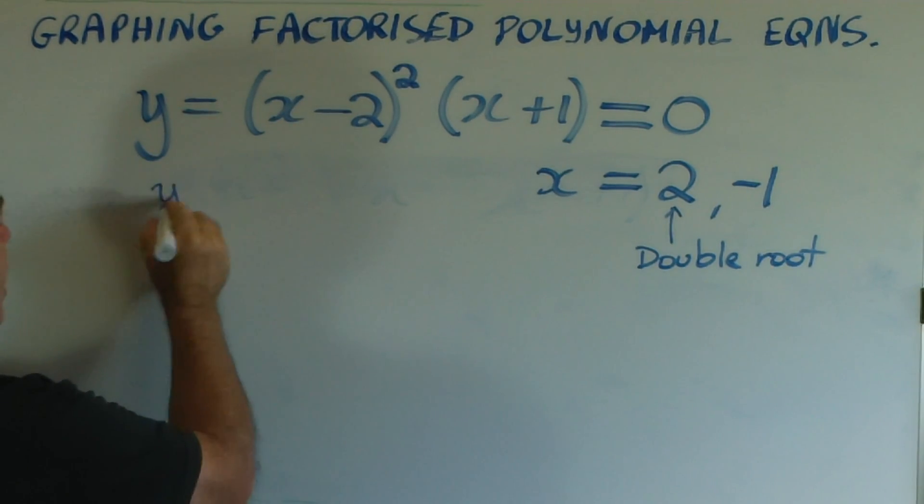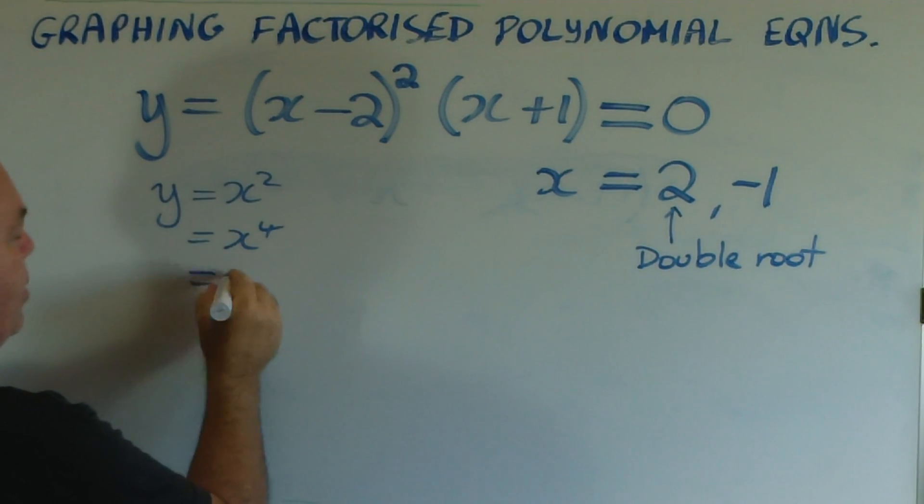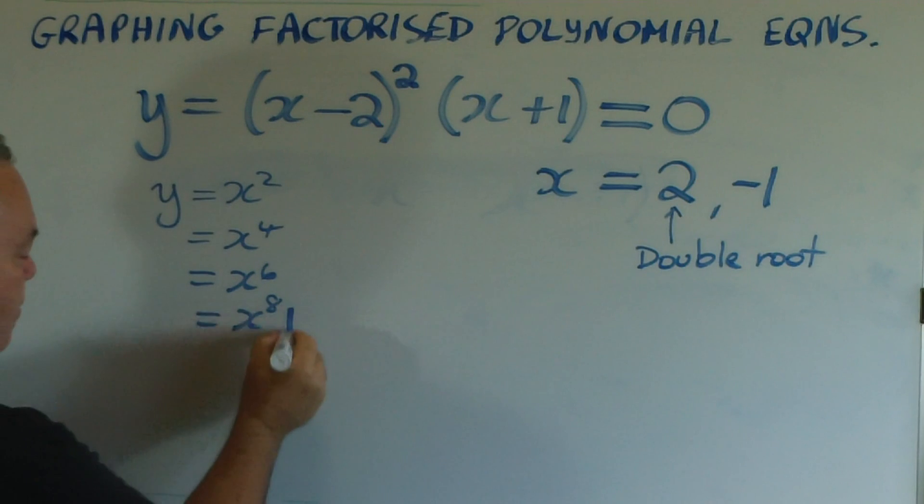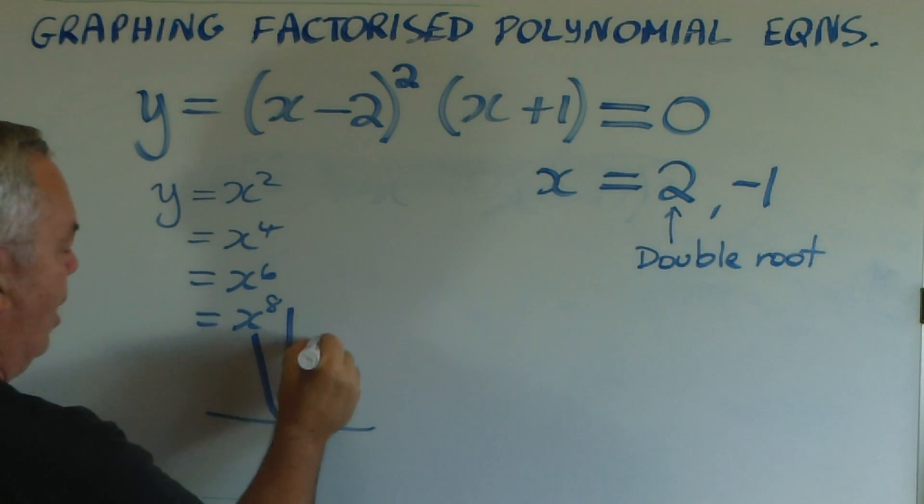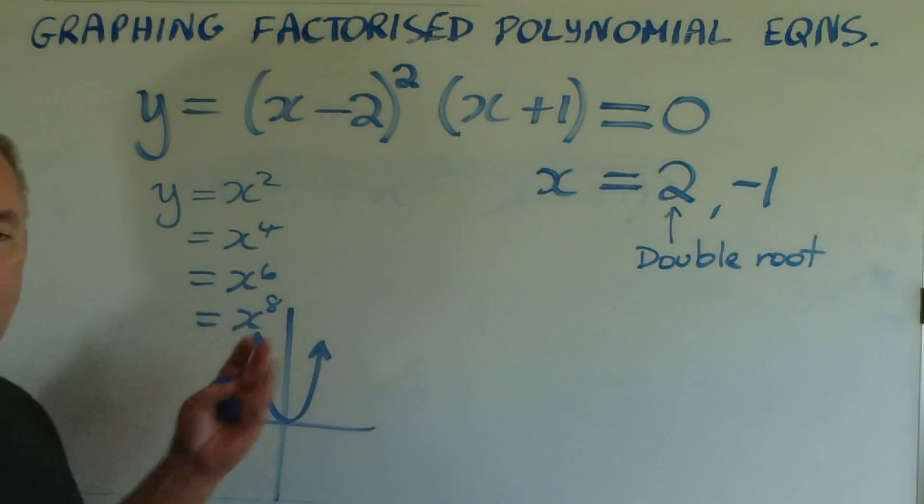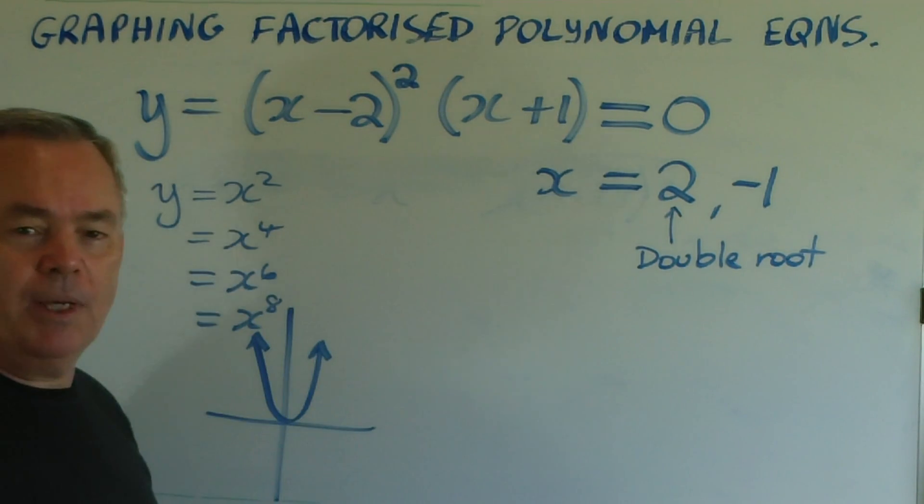We first need to understand that every graph that is of the form x squared, or x to the 4, or x to the 6, or x to the 8—what we call even functions—looks like a parabola. It is symmetrical about the y-axis, and as the power increases, the graph gets steeper and steeper.